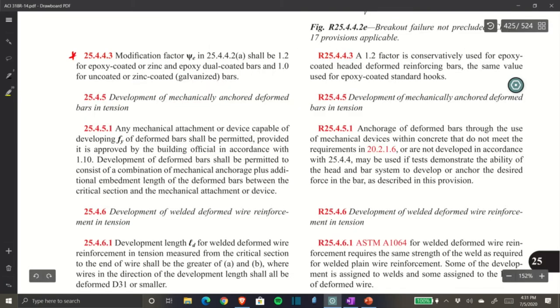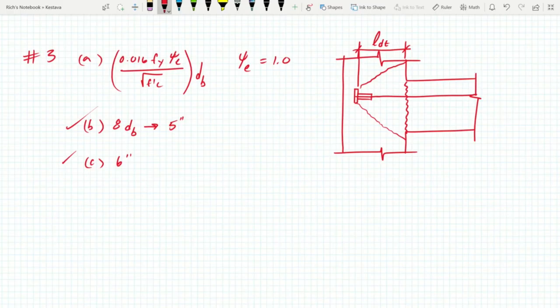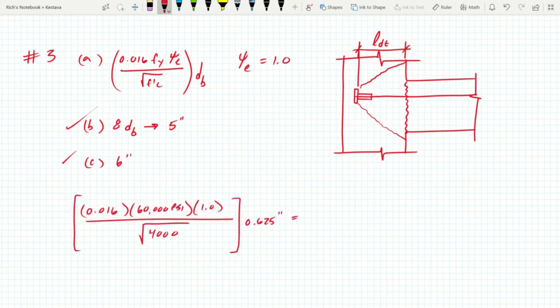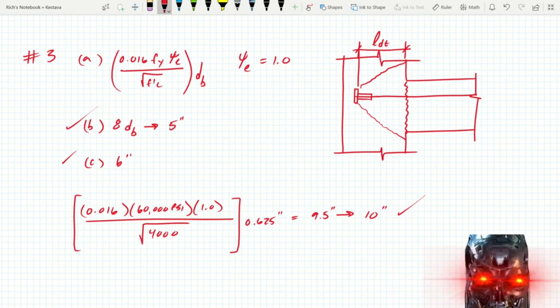We have everything solved for. Let's plug in for equation A. With everything plugged in, we get 9.5 inches, which we will round up to 10 inches. 10 inches is the greatest of the three options. So 10 inches is your development length for your Terminator head.